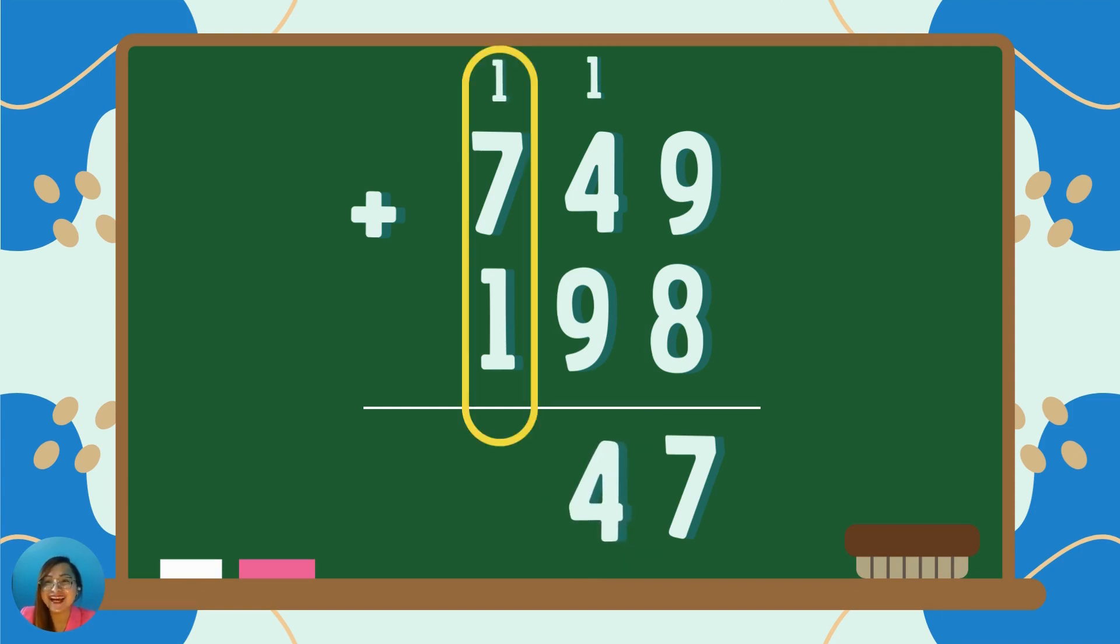Next, add the hundreds digits, including the regroup digits. In this case, we have 7, 1, and another 1. So, 7 plus 1 plus 1 is equal to...